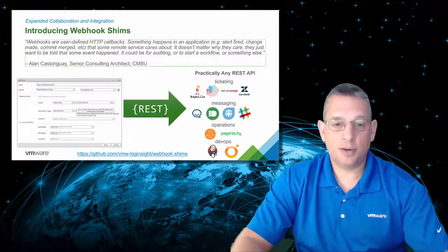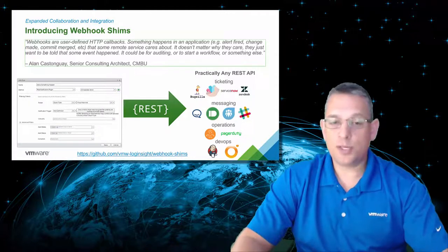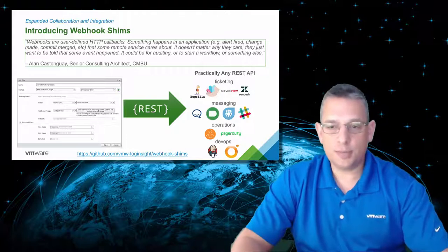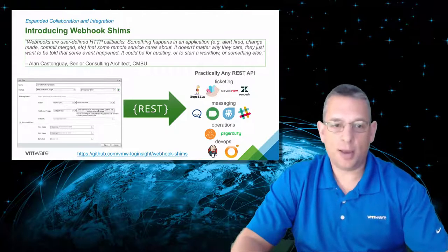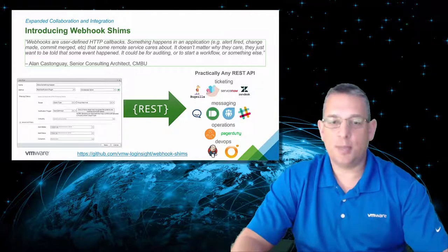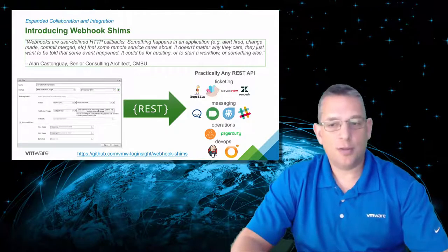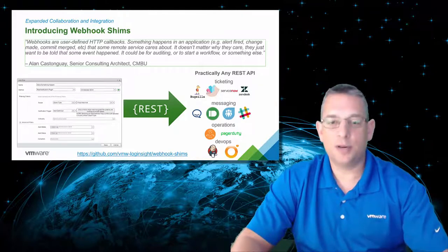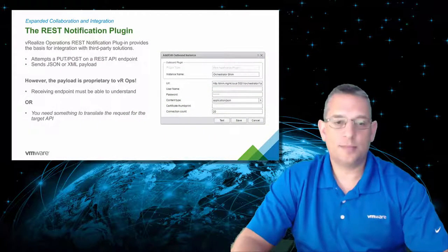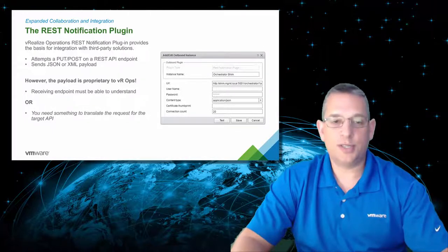For expanded collaboration and integration, webhook shims are now free and open source — they are examples for sending vROps alerts to third-party systems using a user-defined HTTP callback. This gives you insight into application events or failures you want to be informed about, and can be done with any application that uses a REST API. This REST API notification plug-in allows vROps to integrate with most third-party solutions, though the payload is proprietary to vROps, so keep that in mind.